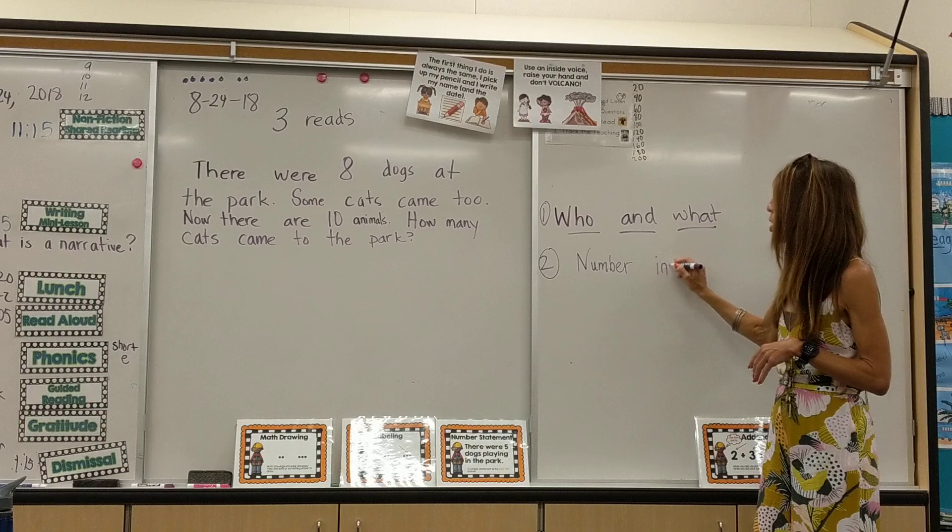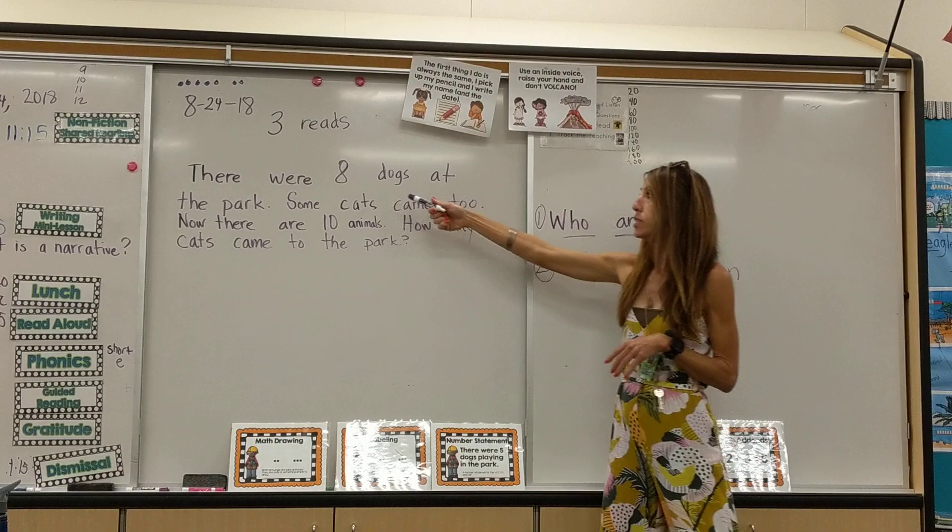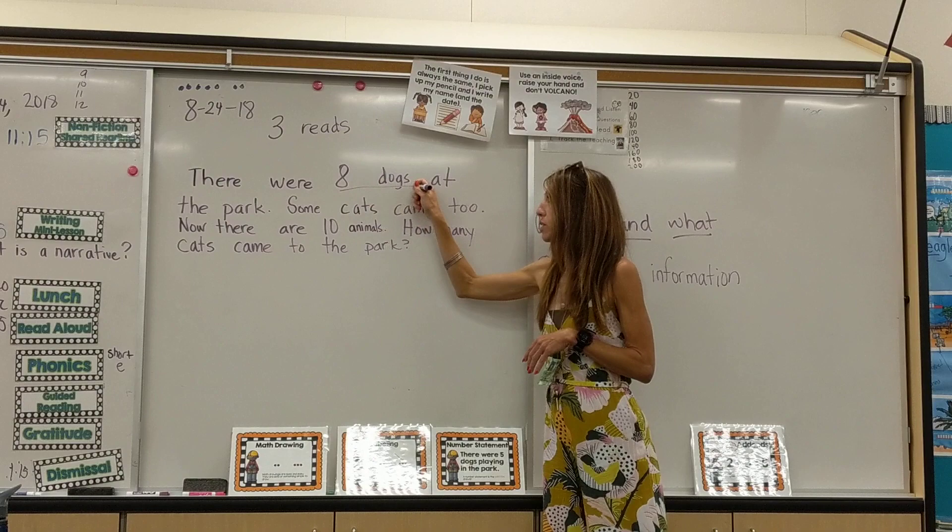In this example, hopefully the kids will come up with: there were eight dogs, and at the end there were ten animals — because truly that is the number information given.